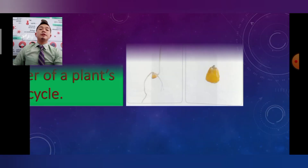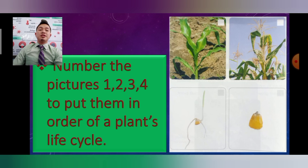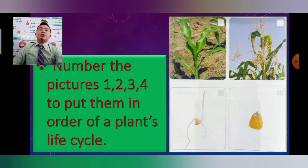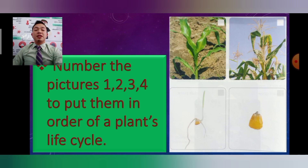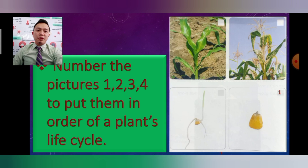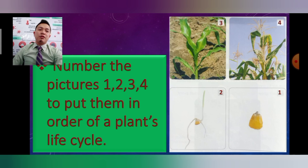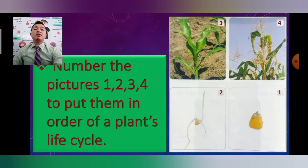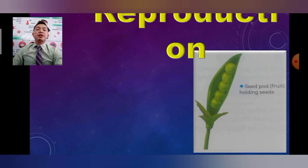Now I want you to answer this activity: number the pictures from one to four to put them in order of a plant's life cycle. Number one is the seed, number two is the seed starting to sprout, number three is the small plant, and number four is the adult plant. The life cycle of corn always starts from the seed, then the seed starts to sprout, then it becomes a small plant, and then turns into an adult plant.